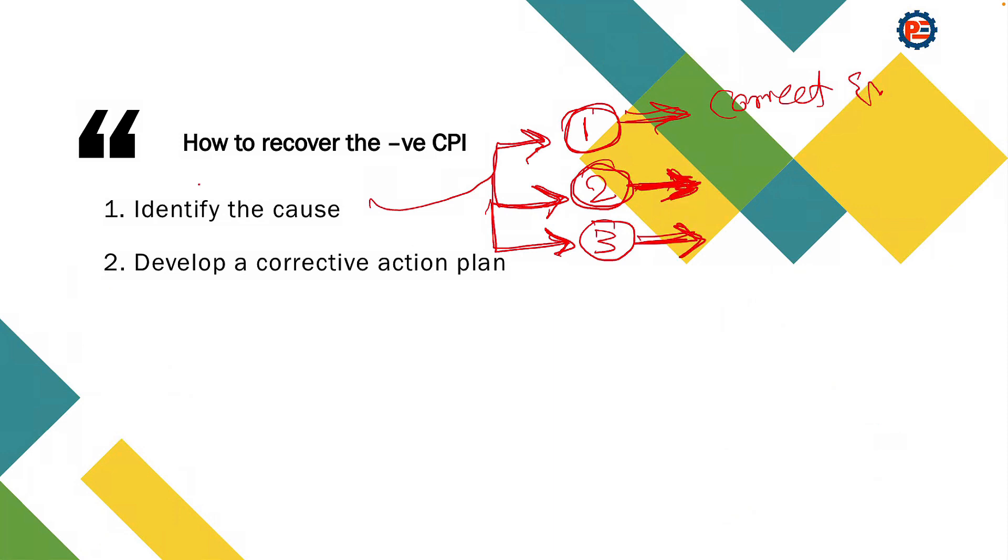Number three: if you have additional scope of work, then you need to add it to your baseline budget, and accordingly, the CPI will be corrected. We define the cause, then we develop a corrective action plan.